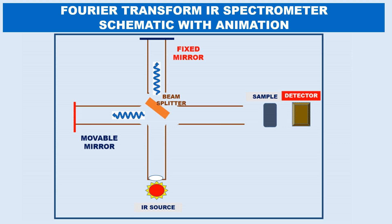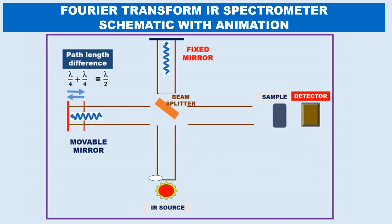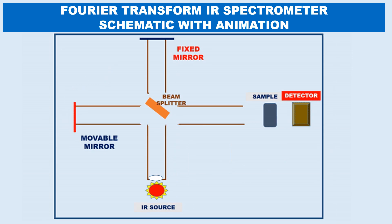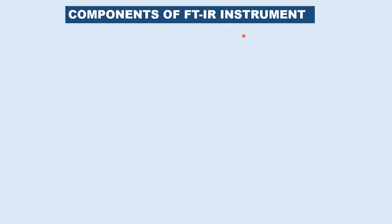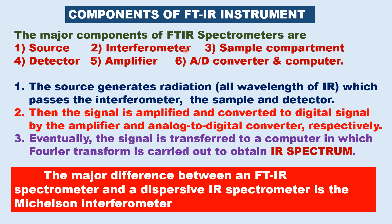Let us now see the full animation of constructive and destructive interference together with the schematic. As you see, there is constructive interference; then the mirror is moved by λ/4, giving a path length difference of λ/2, resulting in destructive interference. The components present in an FTIR instrument are: source, Michelson interferometer, sample compartment, and detector.